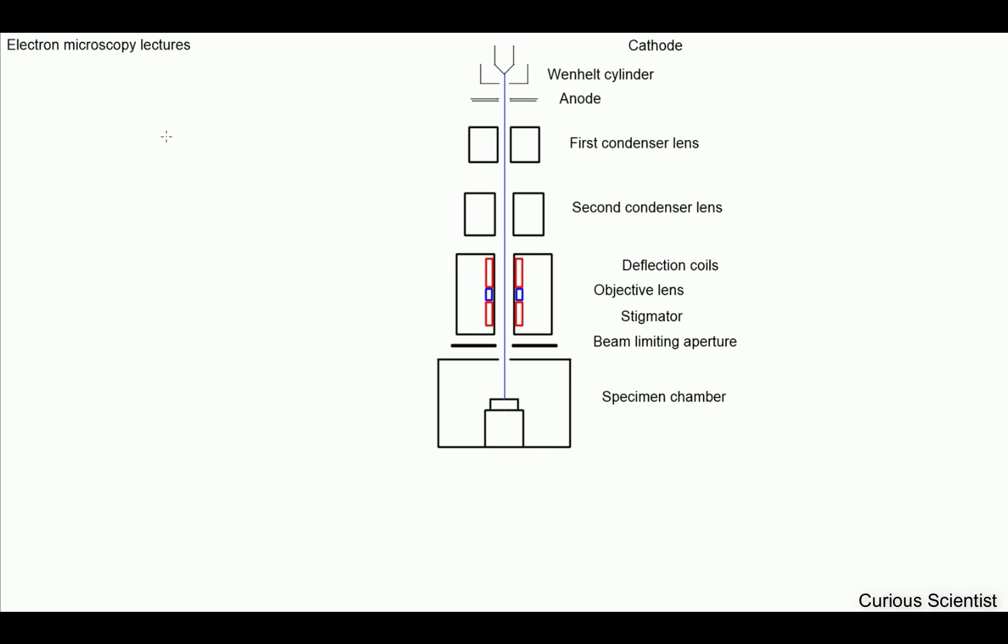Let's start from the top where the electrons are created in the device. If you combine the cathode, the Wehnelt cylinder, and the anode, that is usually called the gun of the electron microscope. The cathode tip is what basically emits the electrons. I'll just briefly discuss this but will go into more details later.